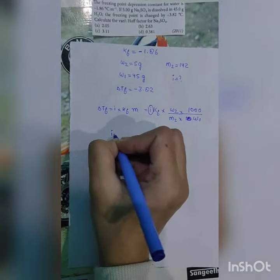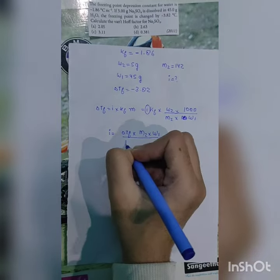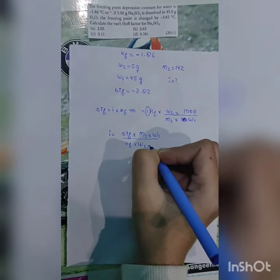So here, the i value will be equal to delta Tf into M2 into W1 divided by Kf into W2 into 1000.